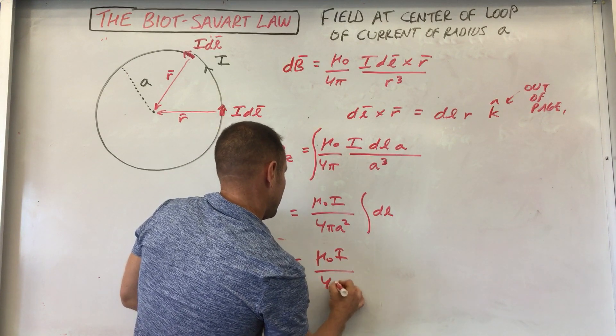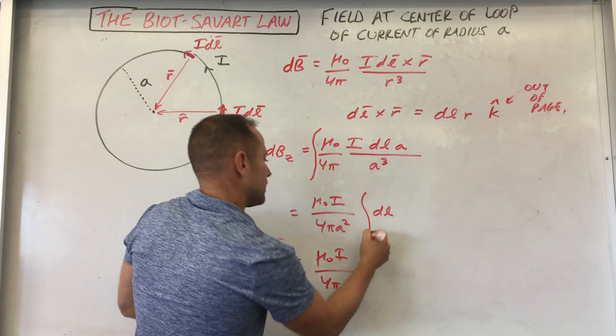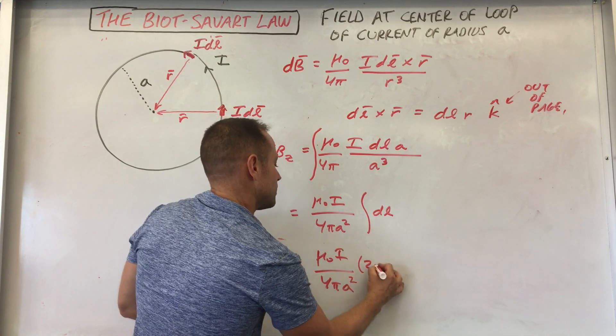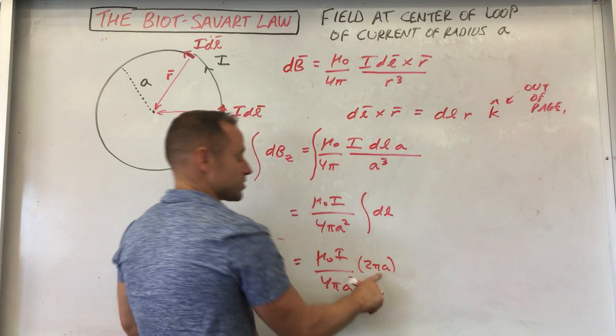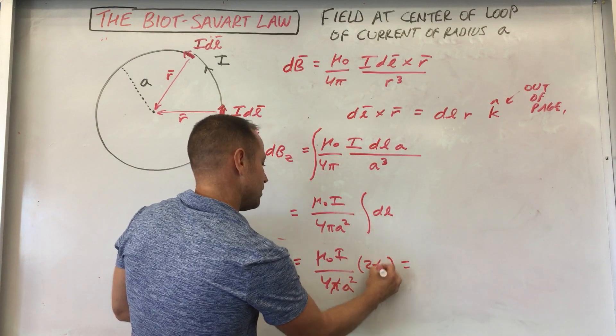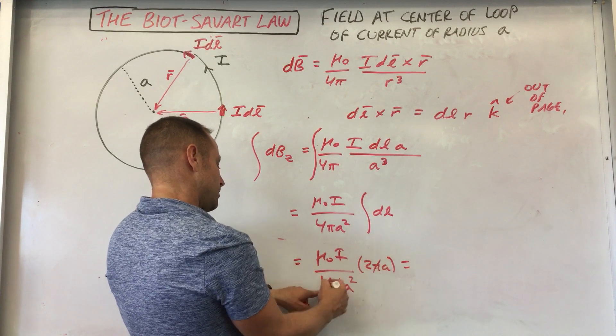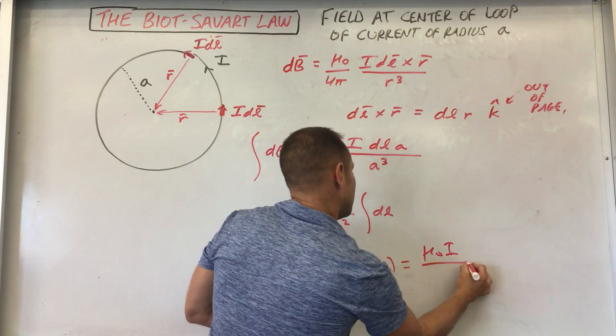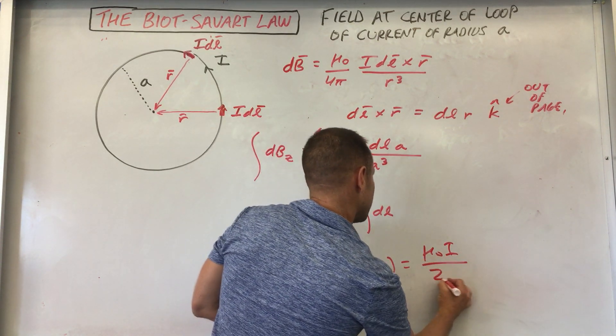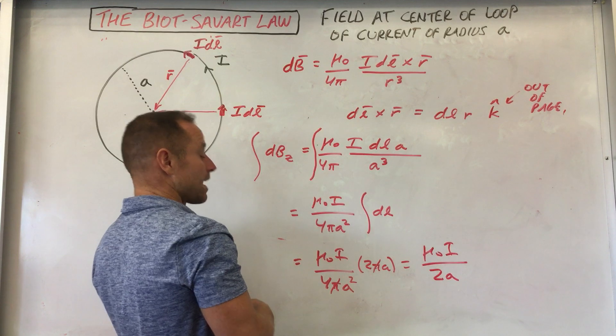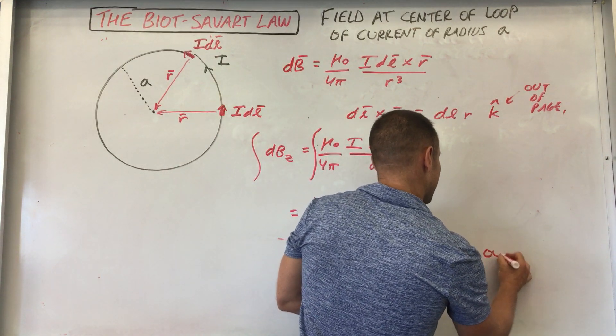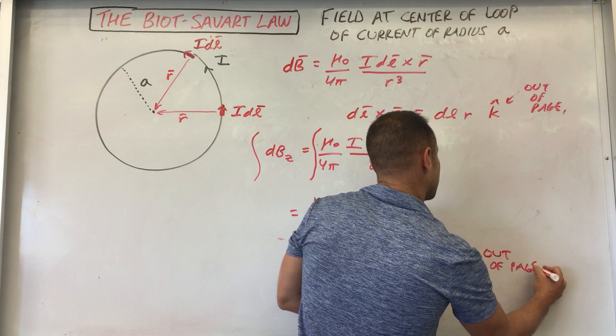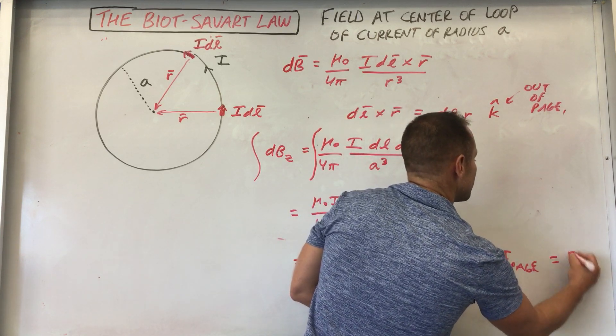Mu naught I, four pi A, whoops, that's A squared, two pi A for the circumference. Looks like the pi's go away. And two and a four conspire to make it two downstairs. So you'll get mu naught I all over two A. That's the strength of the field. And then the direction is out of the page. All right. So that's the value. That's the value of the B vector.